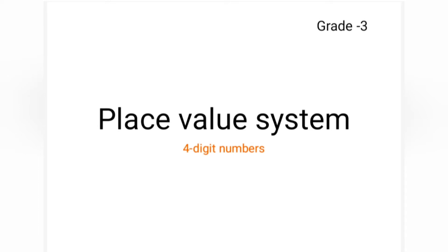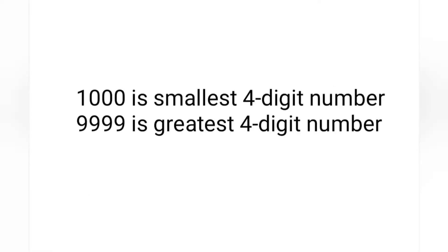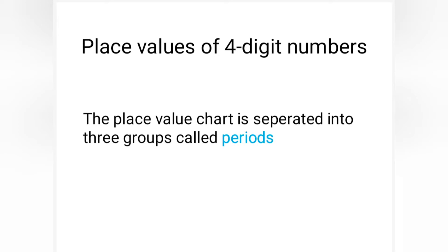Yes, you are right. It's 1000. Now what can we observe? Till 999, it was a three-digit number, and 1000 is a four-digit number, which means one more place value has been added. Remember, 1000 is the smallest four-digit number and the greatest four-digit number is 9999.